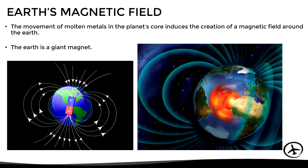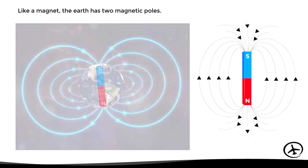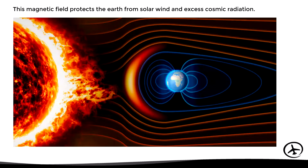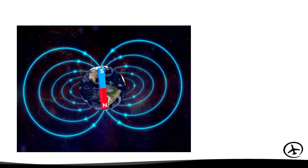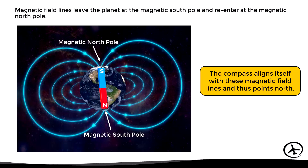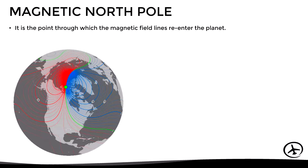The movement of molten metals in the planet's core induces the creation of a magnetic field around the earth, meaning the earth is essentially a giant magnet. Like a magnet, the earth has two magnetic poles. This magnetic field protects the earth from solar wind and excess cosmic radiation, and it allows magnetic compasses to point north. The south pole of the internal magnet is assumed to be the magnetic north pole of the earth, and the north pole of the magnet is the magnetic south pole. The magnetic field lines leave the planet at the magnetic south pole and re-enter at the magnetic north pole — this is how the compass aligns itself and points north. The magnetic north pole is defined as the point through which the magnetic field lines re-enter the planet, and it is the point to which all compasses point.